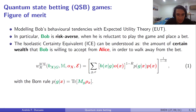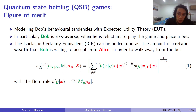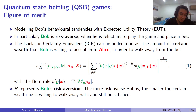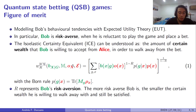This quantity, the ICE, is given by this expression, where in green we have the objects related to Bob, and in red the objects related to Alice, or the game itself. This R that appears here represents Bob's risk-aversion, meaning that the larger R is, the more risk-averse Bob is, and consequently the smaller the certain wealth he's willing to walk away with and still be happy with that.